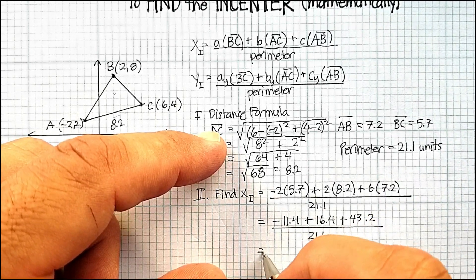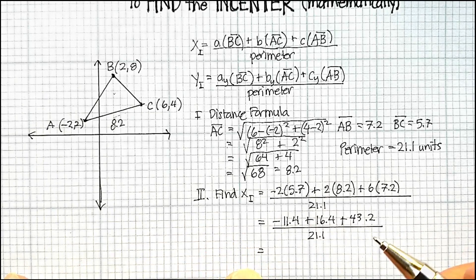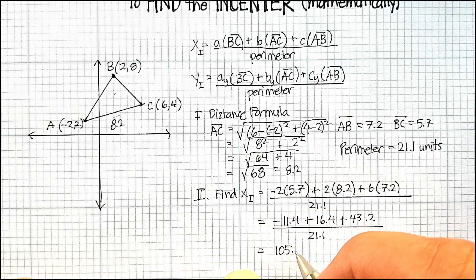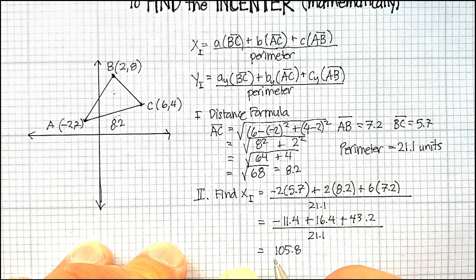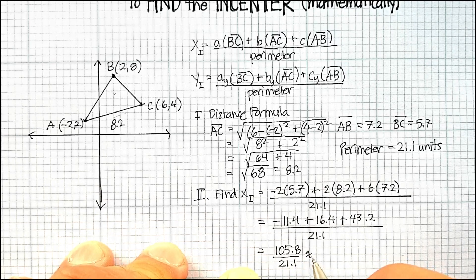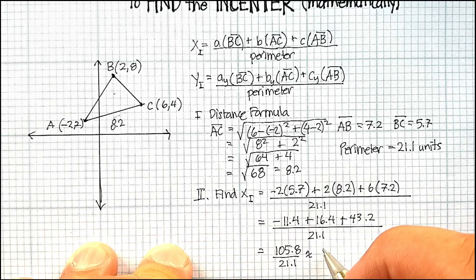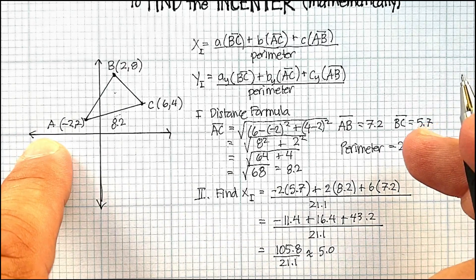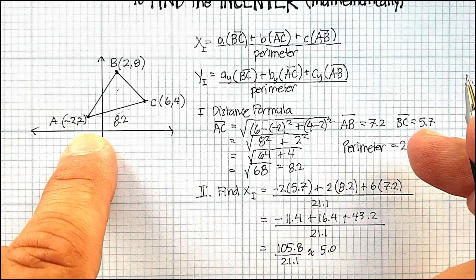And it turns out that my x value for my incenter turns out to be 105.8 over 21.1, or 5.0. Now, let me just go to my actual triangle.